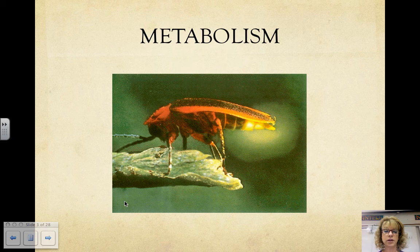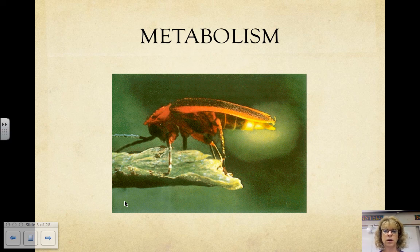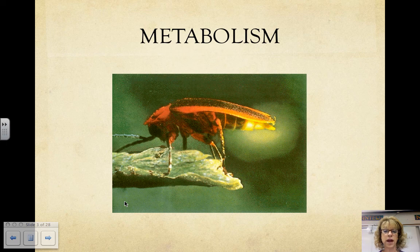Metabolism is all of the chemical reactions that occur in an organism. When a male firefly signals the female — fireflies are actually a type of beetle — the female signals back. A set of chemical reactions occur in light-producing organs in the rear of the insect. Cells in these organs produce luciferin, which is an acidic substance, and an enzyme, luciferase. In the presence of oxygen and the energy from ATP, luciferase catalyzes luciferin to a molecule that emits light. This is an example of how cells put energy to work by means of an enzyme-controlled reaction.